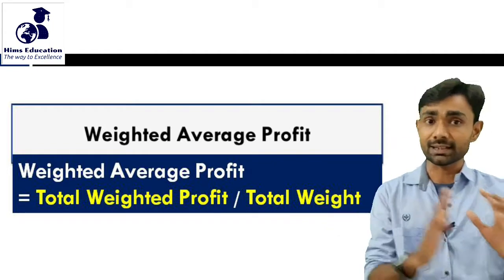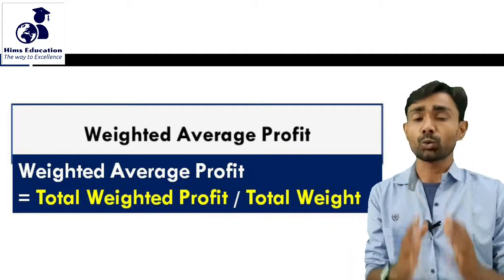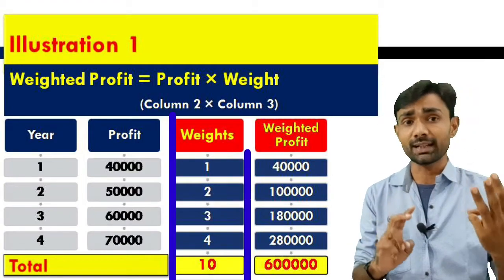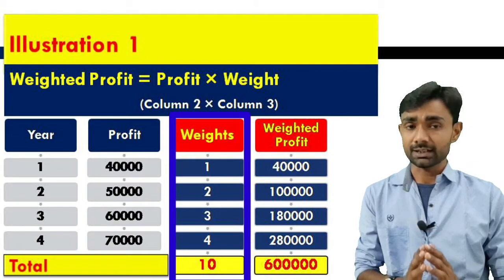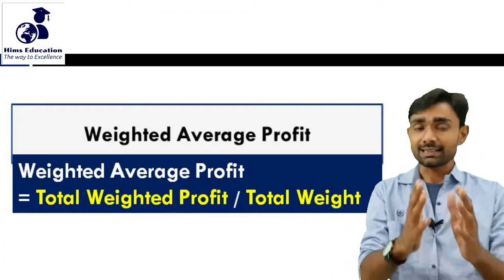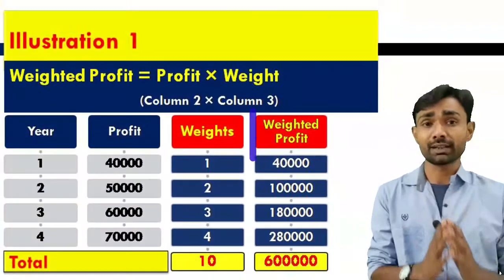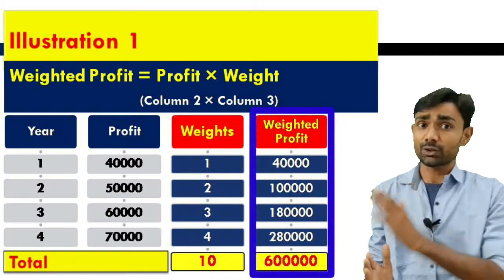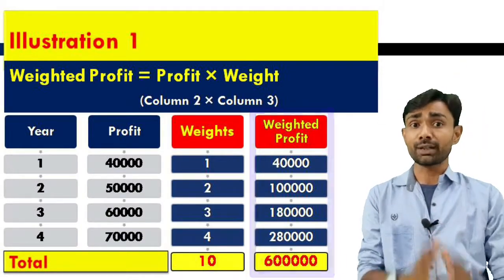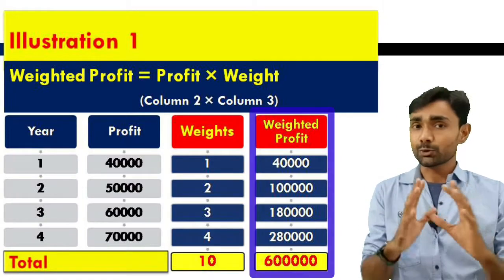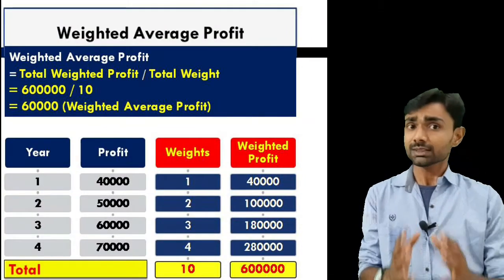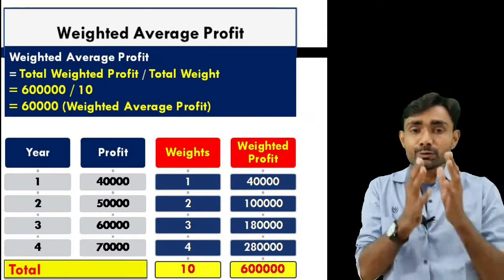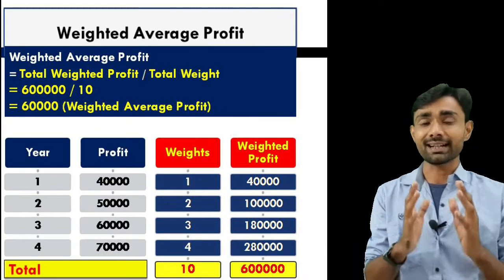Now applying the formula: Total Weighted Profit divided by Total Weight. The total weighted profit is 40,000 plus 1,00,000 plus 1,80,000 plus 2,80,000, which equals 6,00,000. The total weight is 1 plus 2 plus 3 plus 4, which equals 10. So, Weighted Average Profit equals 6,00,000 divided by 10, which gives us a Weighted Average Profit of 60,000 rupees.